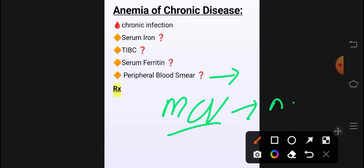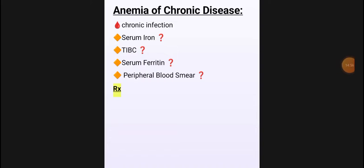Treatment: underlying cause کو treat کرو — lupus ہے تو اسے treat کرو، cancer ہے تو اسے treat کرو، rheumatoid arthritis ہے، trauma ہے، SLE ہے — cause treat کرو تو anemia خود ٹھیک ہو جائے گا۔ اس کا کوئی specific treatment نہیں ہے۔ ان لوگوں کو iron دینے کی ضرورت نہیں ہے کیونکہ serum iron کم ہے لیکن iron body میں موجود ہے — cause treat کرو، خود ٹھیک ہو جائے گا۔